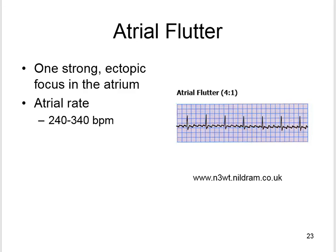Atrial flutter involves one strong ectopic focus in the atrium that fires regularly at a rapid rate; the atrial rate can be 240 to 340 beats per minute. A 4-to-1 ratio describes the atrial rate to ventricular rate. Atrial flutter produces a characteristic sawtooth pattern. The AV node acts as a gatekeeper, allowing only some impulses through to protect the ventricles; it cannot conduct faster than approximately 180 impulses per minute. If the atrial rate is 300 beats per minute, every other impulse reaches the AV node, producing a ventricular rate of 150 in a 2-to-1 conduction.